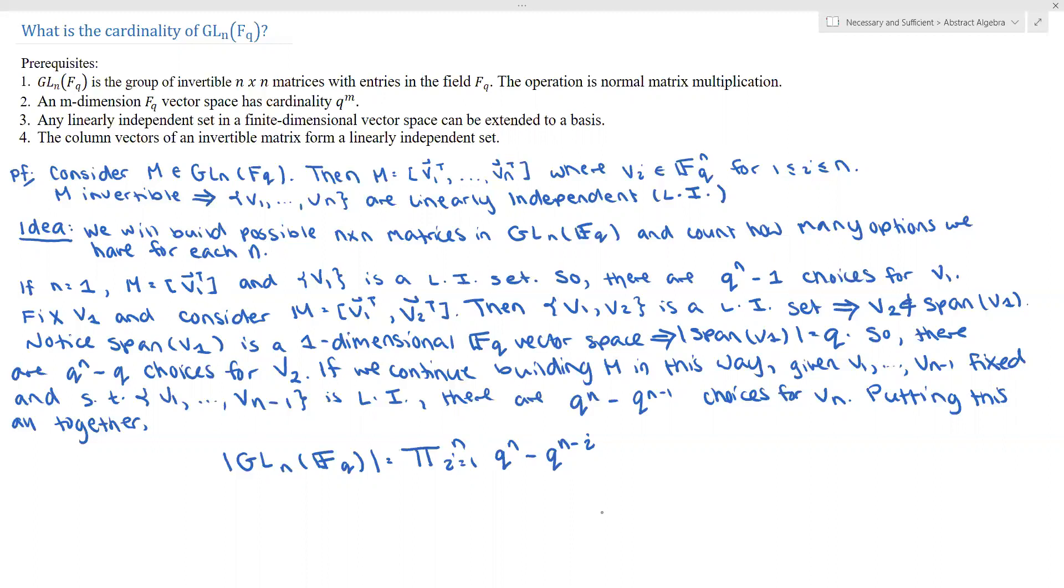So this completes the proof. And we've shown that the cardinality of GLn over FQ is this product from i equals 1 to n of Q to the n minus Q to the n minus i. In our next video, we will compute the order of the special linear group over FQ. So this is a set of n by n matrices with entries in FQ that have determinant equal to 1. And in that video, we will be using more ideas from group theory rather than linear algebra.